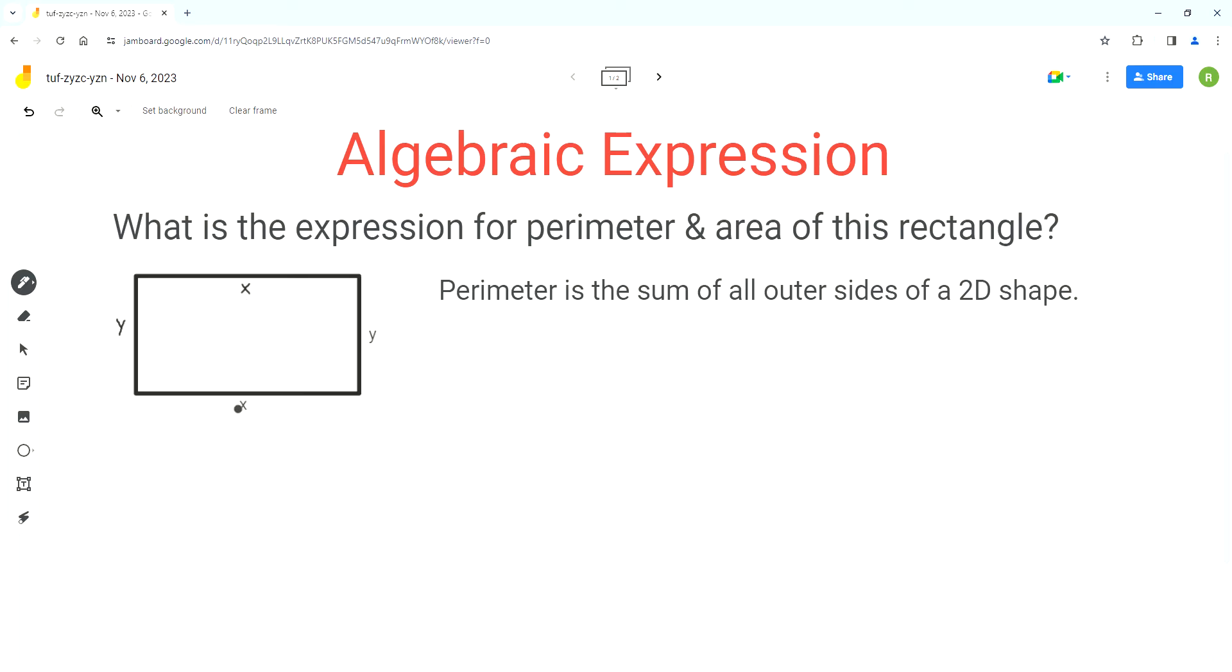We can calculate the perimeter of this rectangle. So we start by writing the equation for perimeter. We have to add up the lengths of all of these four sides, so we do x plus y plus x plus y. These are the four side lengths of this rectangle.